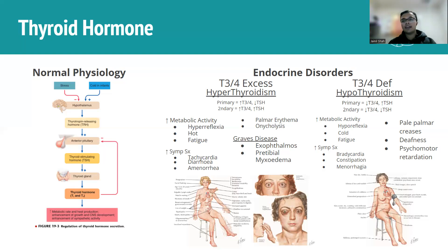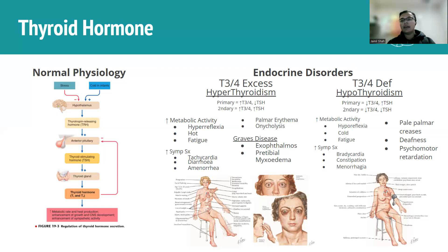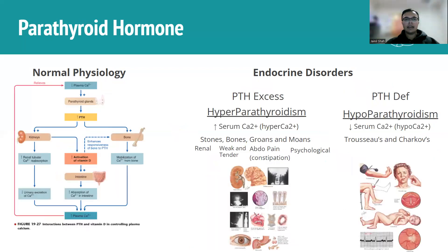Hypothyroidism also causes pale palmar creases, deafness, psychomotor retardation, and neuropathies including carpal tunnel syndrome. Regarding skin, hyperthyroidism gives sweaty, wet skin, while hypothyroidism gives dry, brittle skin. Hair is also dry and brittle in hypothyroidism because it's not being replaced as frequently.